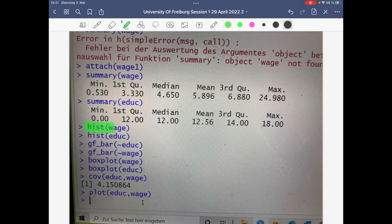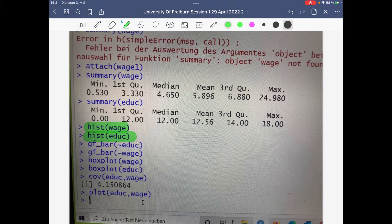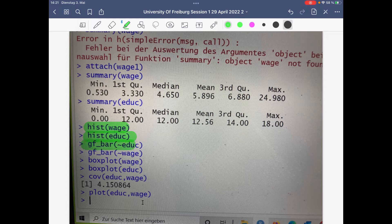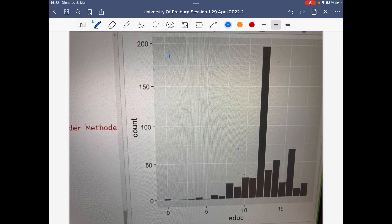Typing in hist for wage and for education, you get the histograms. With ggplot bar and then in parentheses tilde education or tilde wage, then you get the bar diagrams.